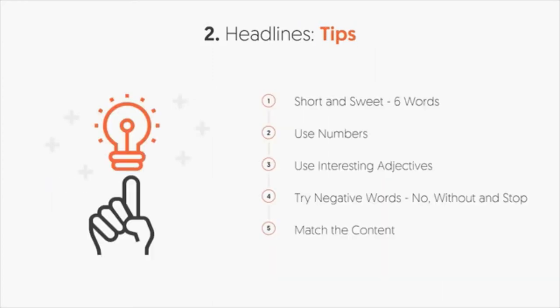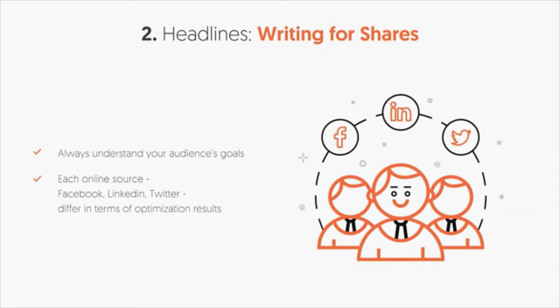Some quick tips: keep headlines short and sweet — around six words tends to do better. Use numbers; people love numbers. Think about magazine covers in the grocery checkout aisle — they use numbers because they know they work. Use interesting adjectives and try negative words like 'no,' 'without,' or 'stop.' Make sure your headline matches the content; if it doesn't, you'll lose trust with your readers. Also make sure you're getting shares on social sites like Facebook, Twitter, or LinkedIn.